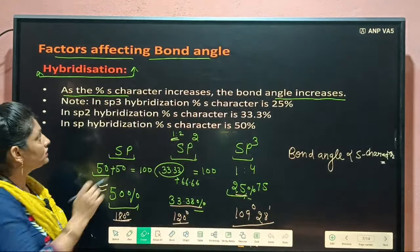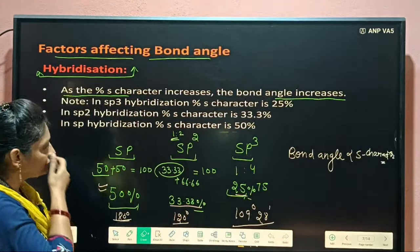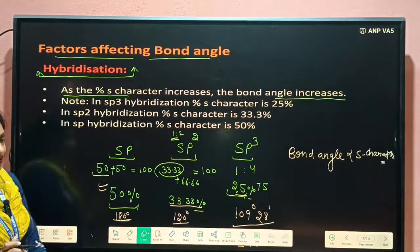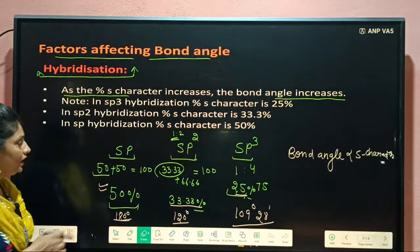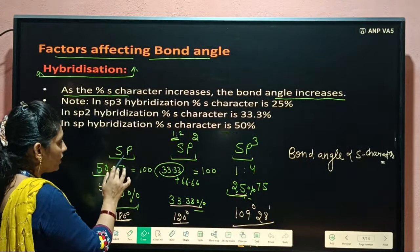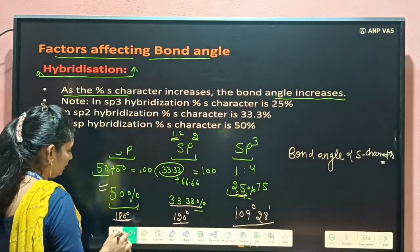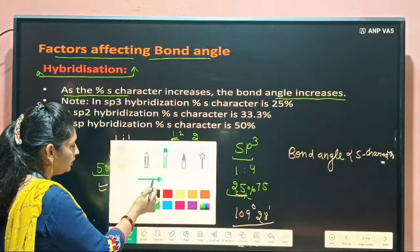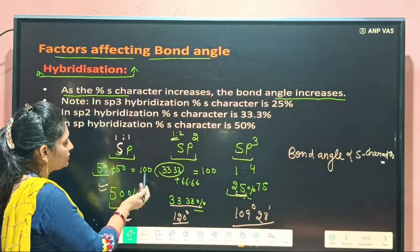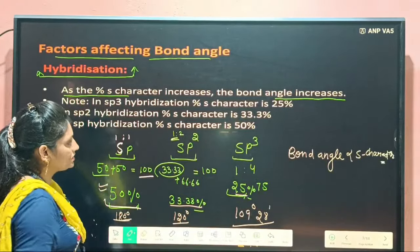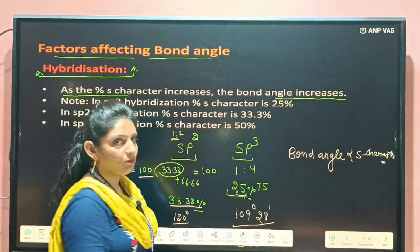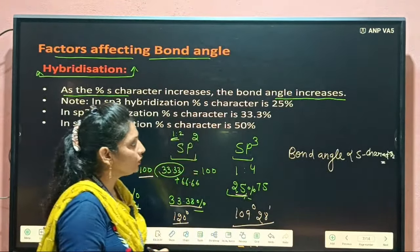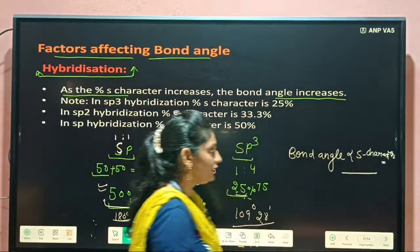We discussed two factors. The first was hybridization. In hybridization, we look at the S character as a percentage. If hybridization is SP, then S and P are in a 1:1 ratio. If we consider total 100, then it is 50 plus 50. So S character is 50% for SP, 33.33% for SP2, and 25% for SP3. Bond angle is directly proportional to the S character.